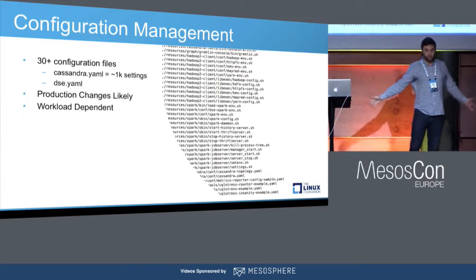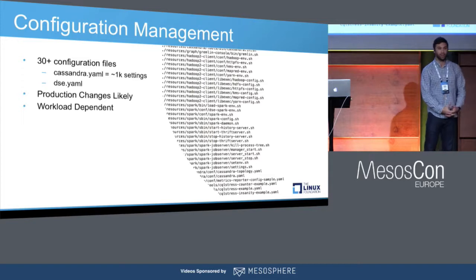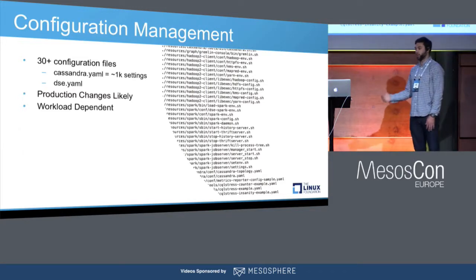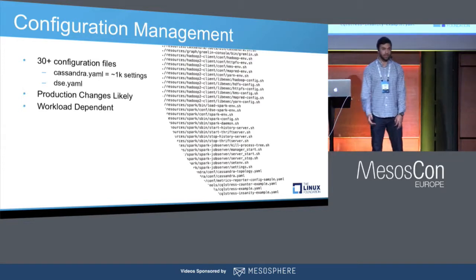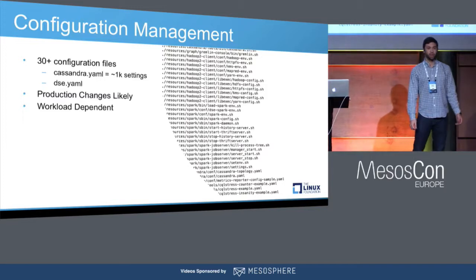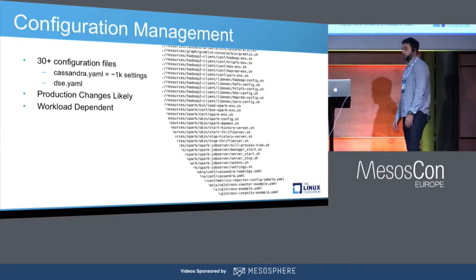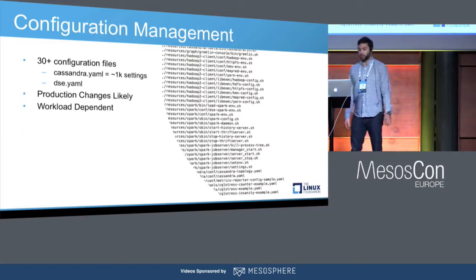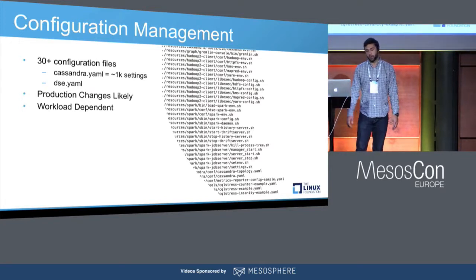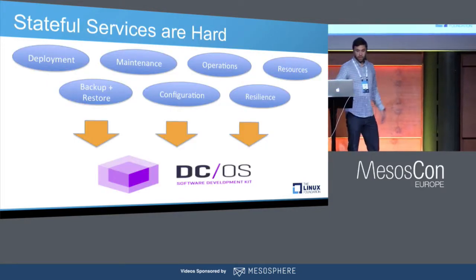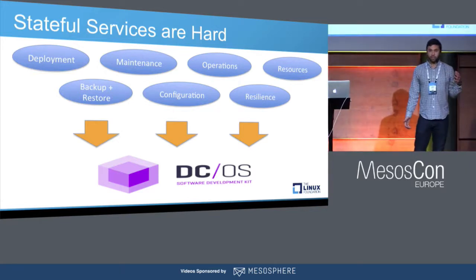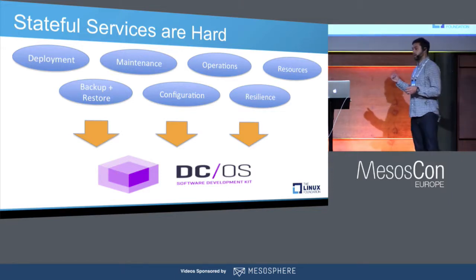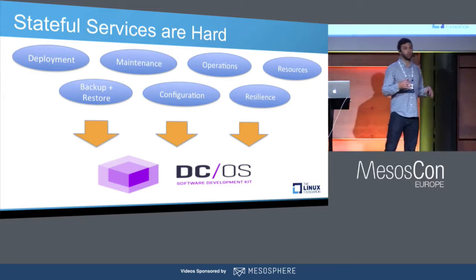Next is configuration management. There are more than 30 configuration files in DSE, so there's a lot to keep track of if you're trying to do this all by hand. Depending on your workload, you can have upwards of a thousand different settings. Especially when making changes in production, it can be very hard to track manually. Specifically in the Cassandra YAML file there are more than 1,000 settings, and the DSE YAML has a comparable amount as well. Stateful services are hard — but this is where the DCOS SDK really comes in and adds value to the DataStacks deployment.